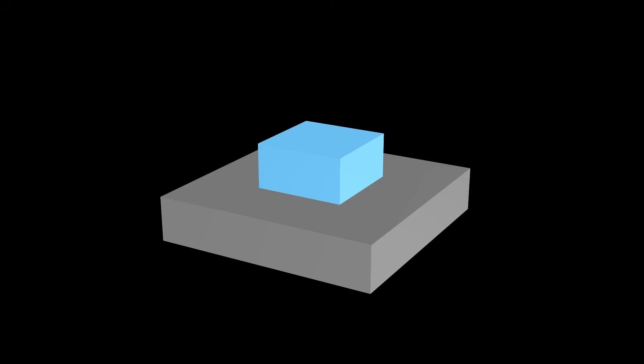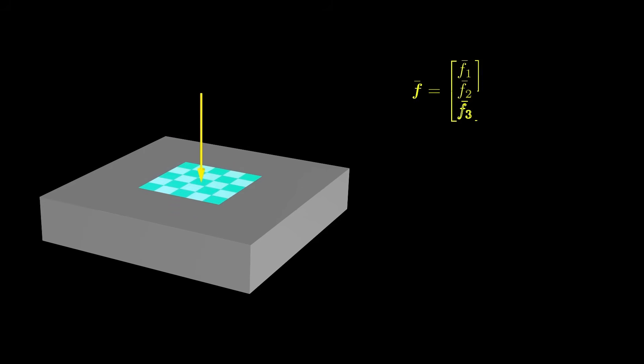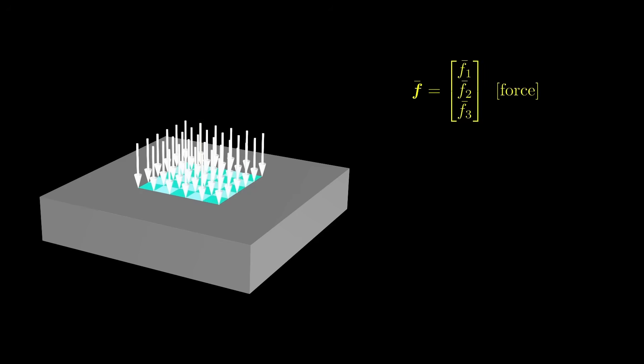Let's start simple. Before we talk about stress, we need to be clear about what force and traction mean. Consider a simple example: an object resting on a surface. Depending on its mass, the object exerts a certain force on the surface. This force is described by a vector, which we will denote by F. We can also define another vector-valued quantity representing the force per unit area. This force per unit area is sometimes loosely called stress, but in continuum mechanics stress means something slightly different — the force per unit area acting on a surface is instead called traction, and we denote it by T.